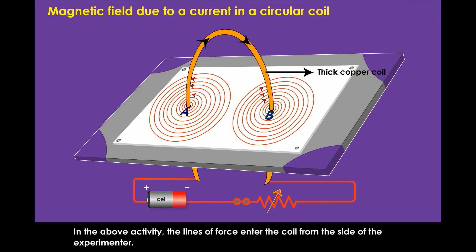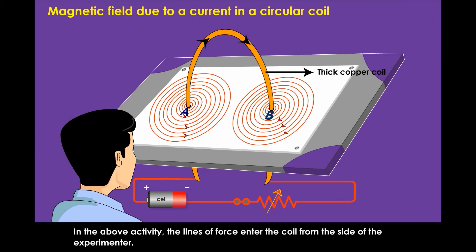In the above activity, the lines of force enter the coil from the side of the experimenter.